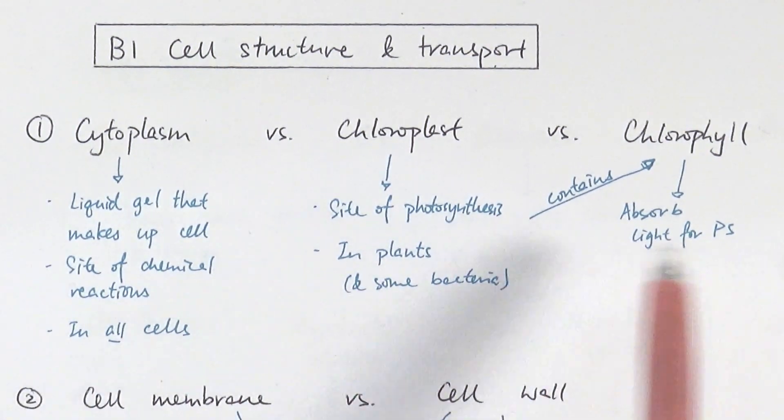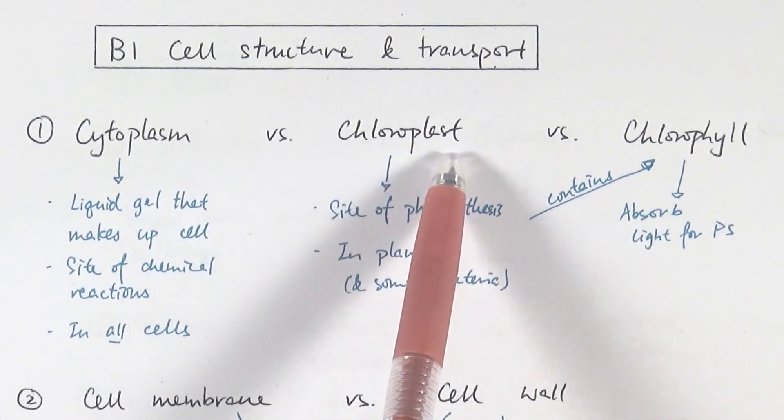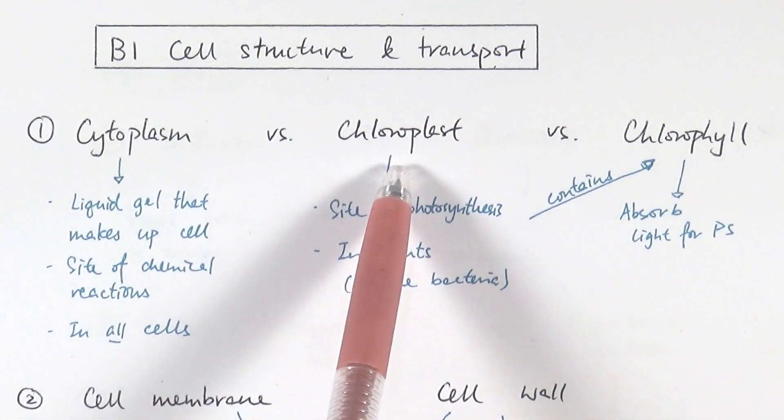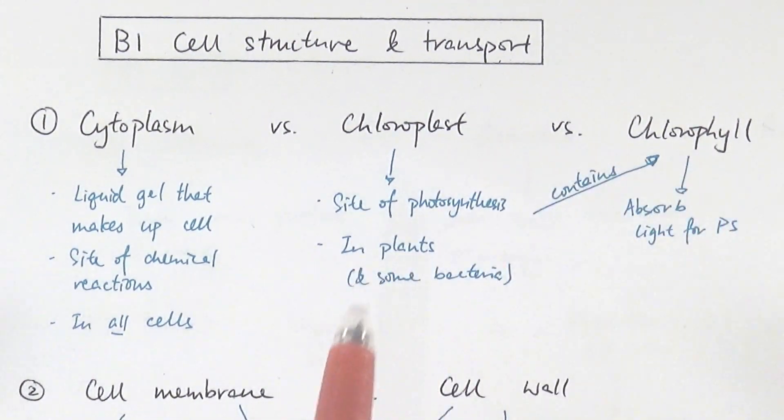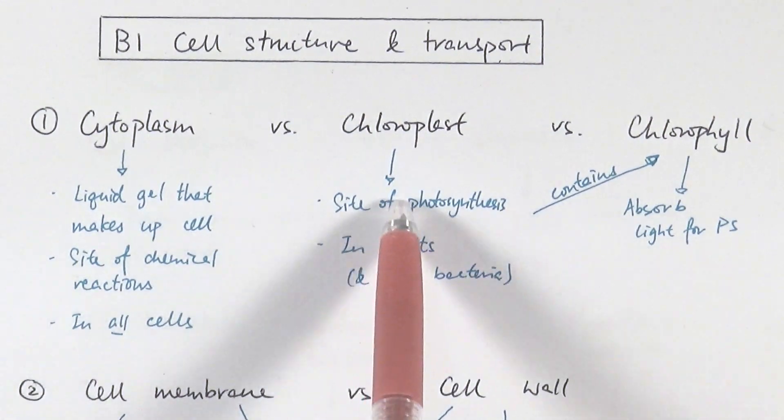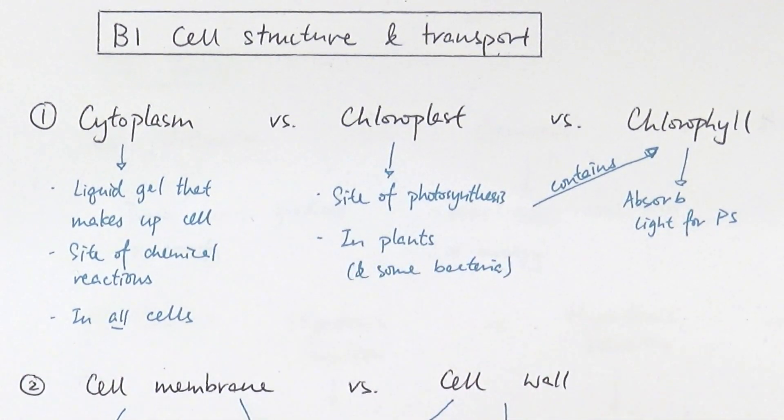So make sure you're clear that cytoplasm is the liquid gel, chloroplast is the name of the organelle found in plants, and chlorophyll is the pigment found within chloroplast. Don't think that they can be used interchangeably.